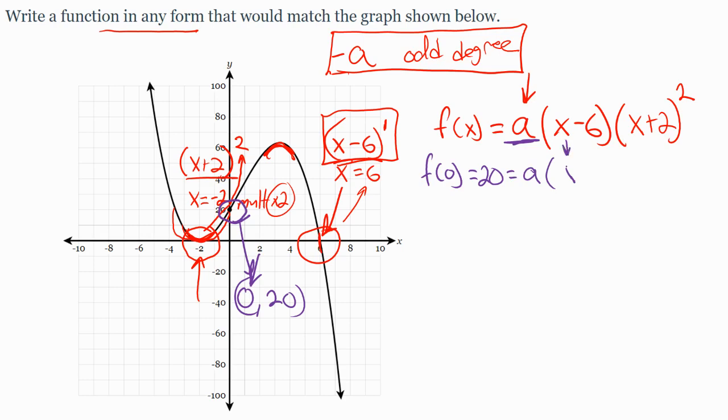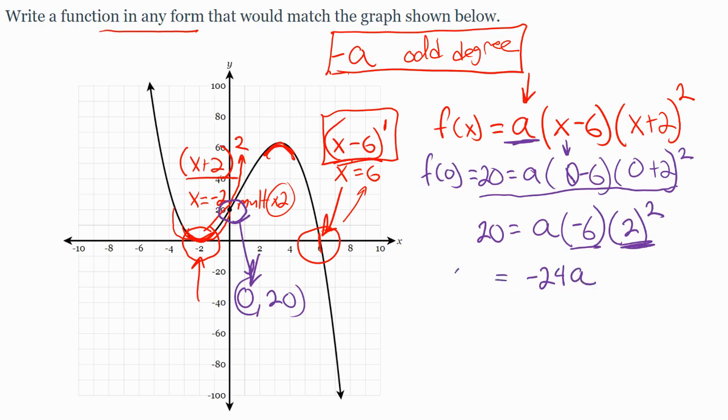Set that equal to my function that's in factored form, a times - I'm going to plug in zeros. So this is going to be 0 minus 6 times 0 plus 2 squared. And now I have an equation that I can work to solve for a. So 20 is equal to a times negative 6 times 2 squared. So then working it out, 2 squared is 4, 4 times negative 6, I get negative 24a equals 20.